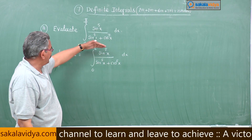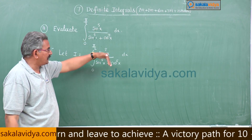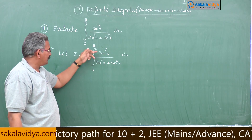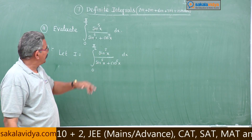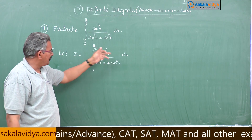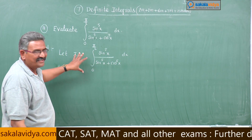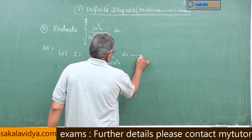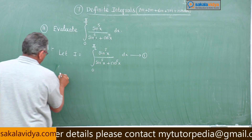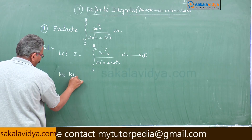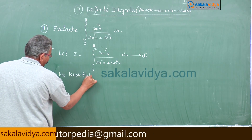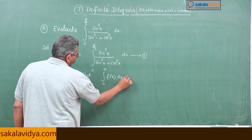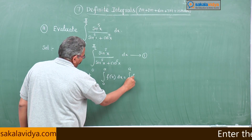Always remember: if the problem is of the form sin^n(x) / [sin^n(x) + cos^n(x)] dx, or tan^n(x) / [tan^n(x) + cot^n(x)], or sec^n(x) / [sec^n(x) + cosec^n(x)] dx, this method has to be adopted. We know that integral from 0 to a of f(x) dx equals integral from 0 to a of f(a - x) dx — call this equation 1.